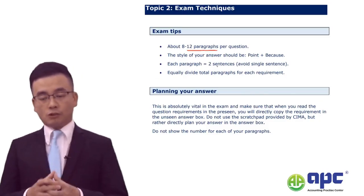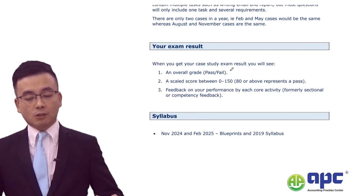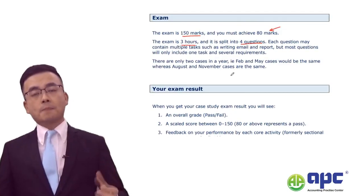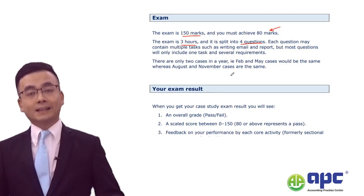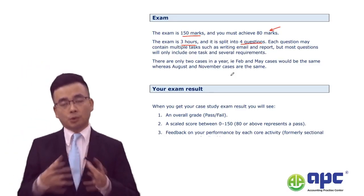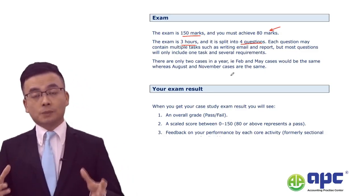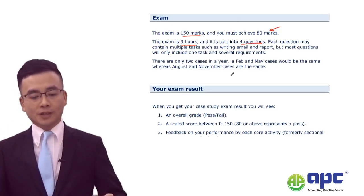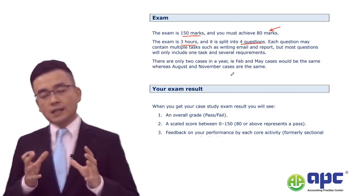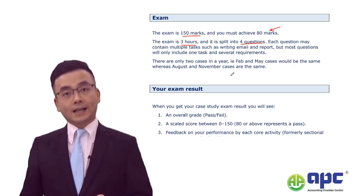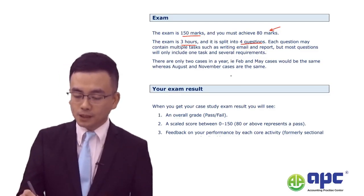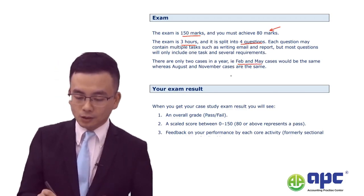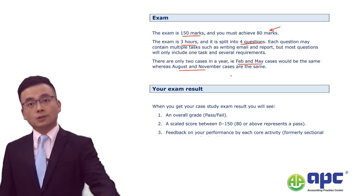So, 12 paragraphs for one question. Sometimes a question will have two requirements, and sometimes three, split into parts A, B, and C. Make sure your 12 paragraphs are distributed accordingly — for example, if you are asked about three sub-requirements, allocate four paragraphs to each. There are two exam cases per year: the OCS exam in February and May uses the first case, and August and November use another case.